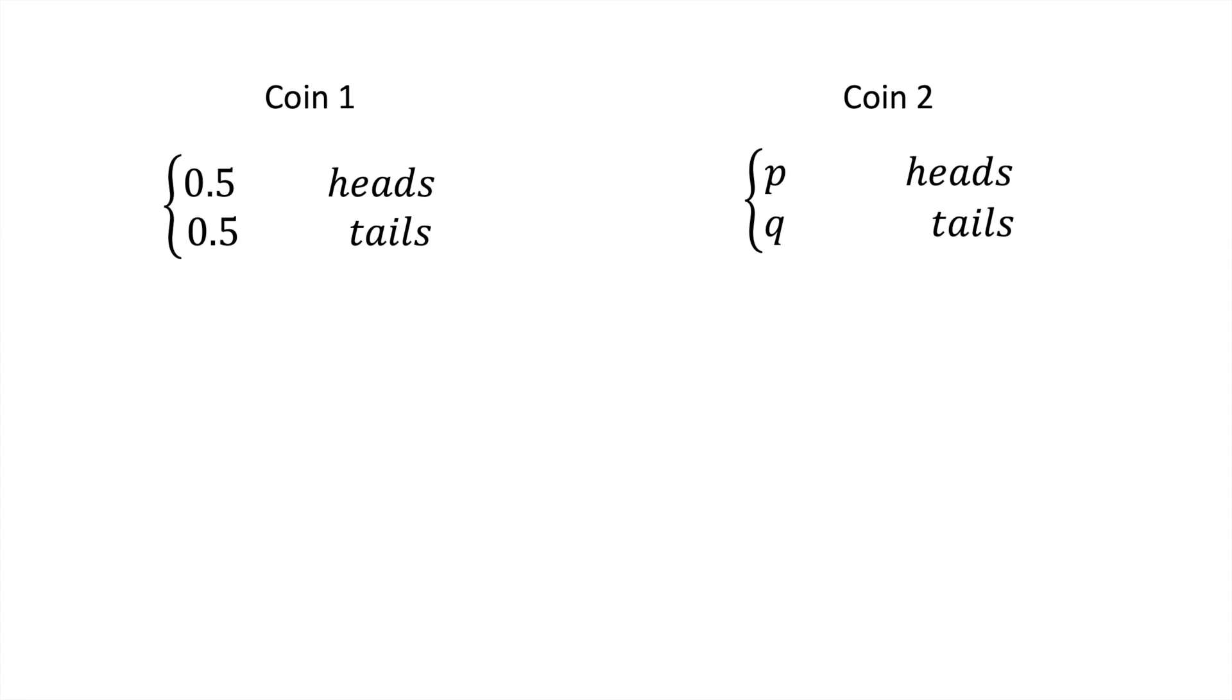There isn't a trivial answer to this question. We might be able to make general statements about which examples are closer. For example, if p is 0.55, then coin 2 would clearly be much closer to the fair coin than if p was 0.95.